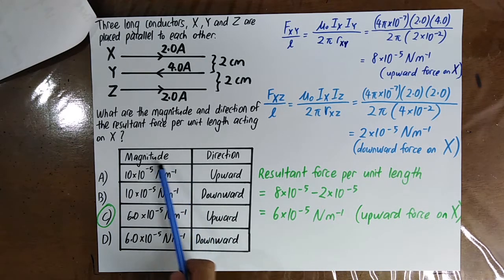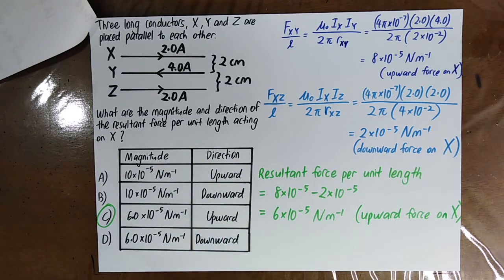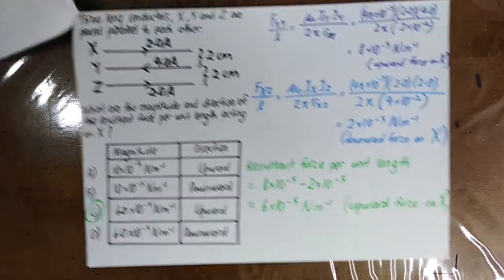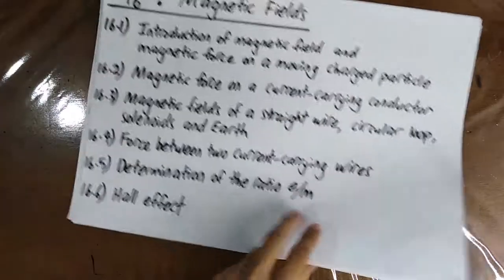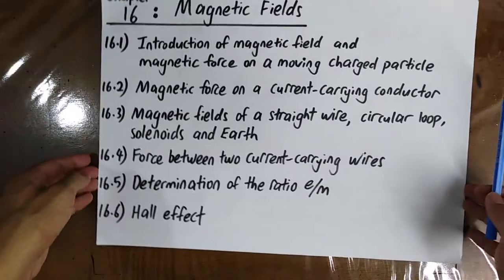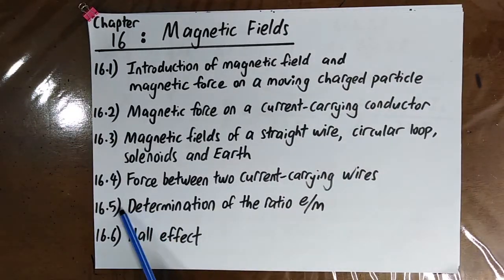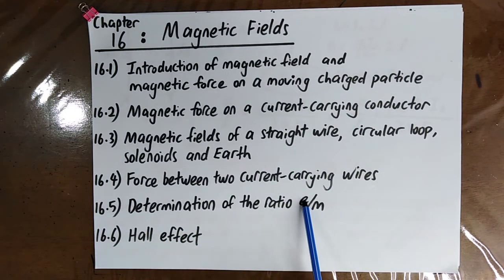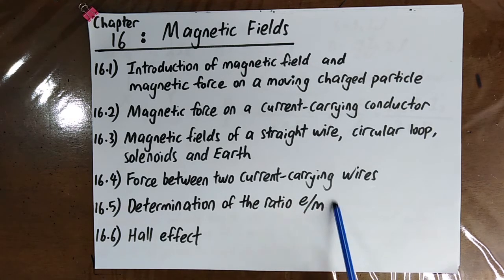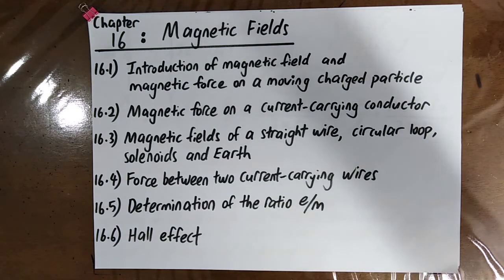So you can find the magnitude and direction of the resultant force per unit length on X accordingly. In the next video, we'll be talking about the determination of the ratio e/m, which is the specific charge. Thank you, I'll see you next time.